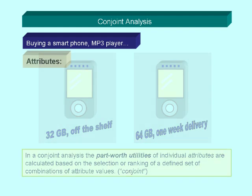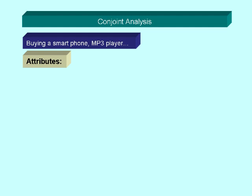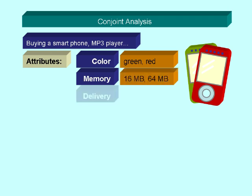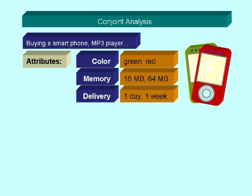Let's make our example a little more complex. We take into consideration three attributes. We look at color: green or red. We look at memory size: 16 or 64 megabytes. And we look at delivery time: one day or one week.